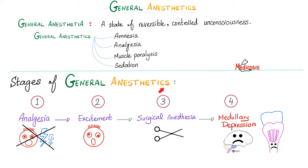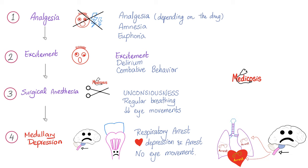What are the stages of general anesthesia? First, analgesia — with amnesia and euphoria depending on the drug. Second, excitement — you become delirious, angry, anxious, even violent. Third, surgical anesthesia — the sweet spot, where you are unconscious with irregular breathing and decreased eye movement. Fourth, medullary depression — respiratory arrest, cardiac depression, cardiac arrest, no eye movement. This happens if too much anesthetic is given.